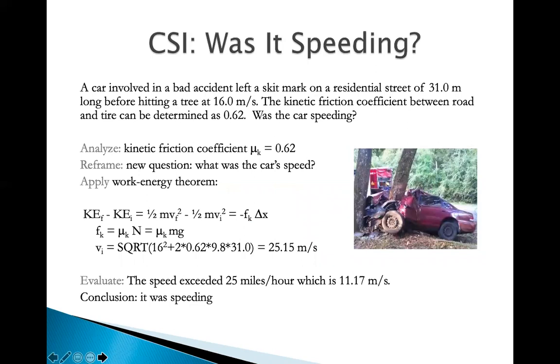Another example, CSI was the car speeding. If a car involved in a bad accident, a lot of police departments have police officers trained to analyze the road accident using physics. Here's an example. If the skid mark is 31 meters long, and before the car hits a tree at 16 meters per second, there's a way to determine that.